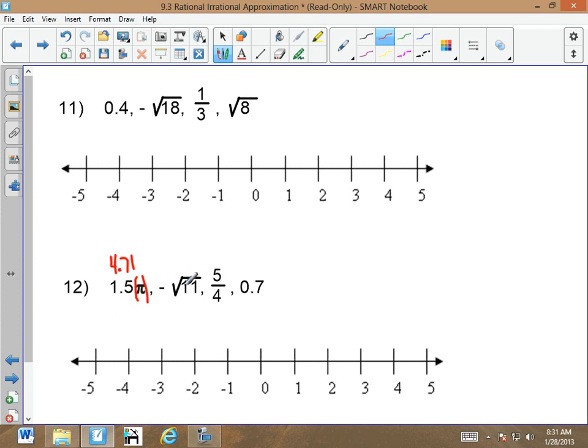Now, I need to convert this negative square root of 11 into a decimal. So, I go minus square root of 11 equals negative 3.31. I'm going to call that negative 3.32 because it's 3.16. 5 over 4. Do you remember what 5 over 4 was? 1.25. And then we have 0.7. So, now, I'm not going to do this in increasing order. I'm just going to place them on the number line.